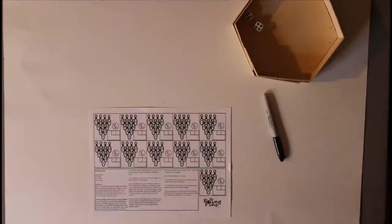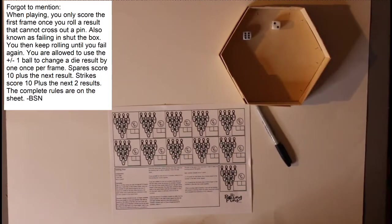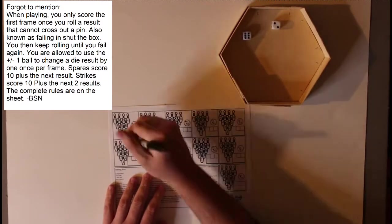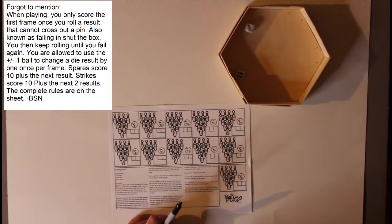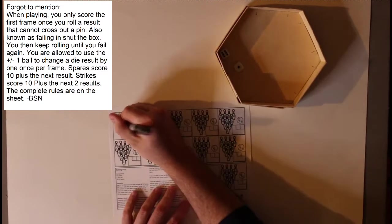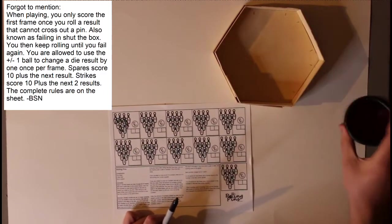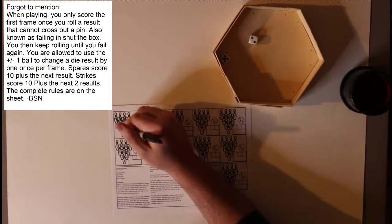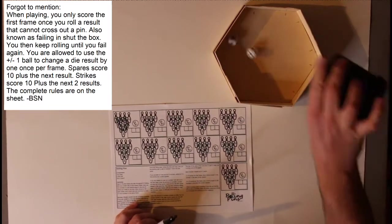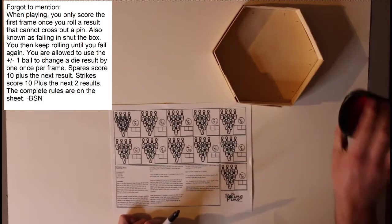So let's get started with how to play Rolling Pins. You'll need a sheet, and you'll need two dice, and you'll need something to write with. And what you're doing is basically the same thing as Shut the Box. You go to the first frame and you keep trying to shut the box. You keep trying to get a strike on that alley until you're unable to. Now you do have one special power per frame, and that is to adjust one die plus or minus one.